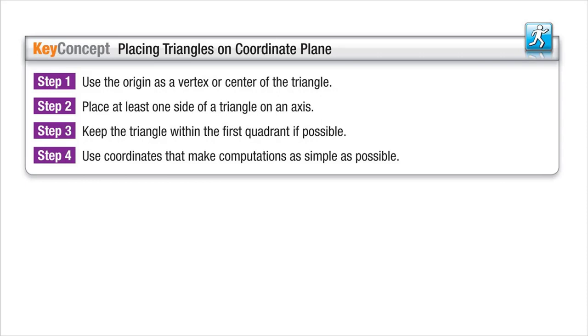So our steps for placing triangles on the coordinate plane. Make sure you have these hints in your notes. Use the origin as a vertex or center of the triangle. Place at least one side of the triangle on an axis. Keep the triangle within the first quadrant because then all your numbers are going to be positive. And use coordinates that make computations as simple as possible. So you might have to make something 2a or 3a if you're trying to find a half or a third of something.